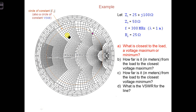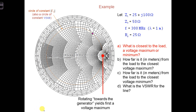Rotating away from the load towards the generator in the clockwise direction, the circle of constant VSWR passes first the real axis — the horizontal axis — on the right side of the Smith chart origin. Therefore, a voltage maximum occurs closest to the load.